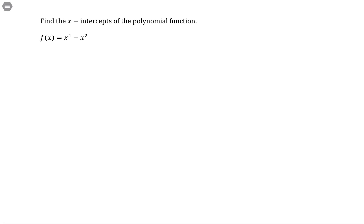Find the x-intercepts of the polynomial function. Here we have f of x equals x to the 4th minus x squared. So to identify the x-intercepts, what we are looking for are real zeros of this polynomial.